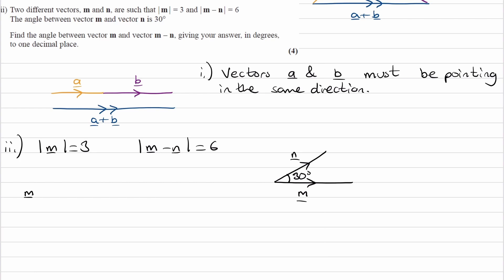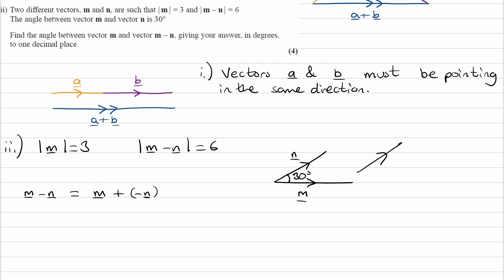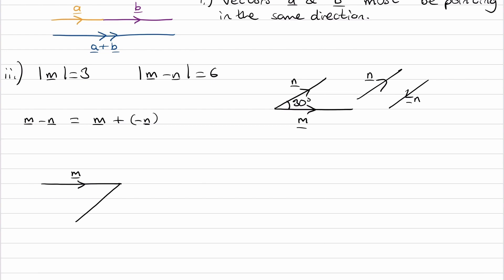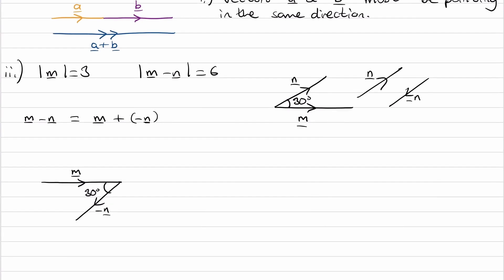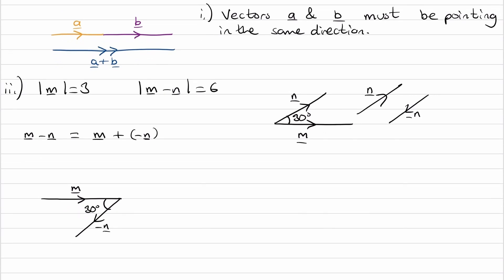m minus n is the same thing as m plus the negative of n. Drawing head to tail: if n is going towards the top right, then minus n is going in the opposite direction. So we draw m first, and then n would be going in that direction such that the angle between them is 30 degrees — making this minus n. If we draw negative n on the end of vector m, the z-rule applies: these two sides are parallel to one another, and therefore this angle here is 30 degrees.